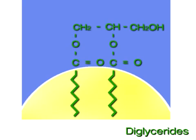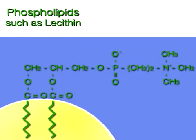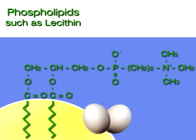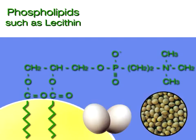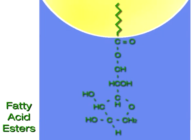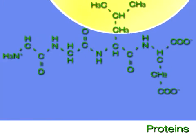Other types of emulsifiers include diglycerides, phospholipids, such as lecithin, which can be found in eggs and soy, fatty acid esters, and a variety of protein molecules.